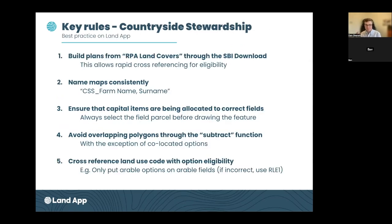The key rules when mapping a countryside stewardship application on the Land App: these are five rules I've pulled out after lots of experience, to make sure you're getting the most out of the platform. Rule number one is always use the RPA land covers to build your plan, accessible through an SBI number download — a Single Business Identifier. The reason is that the field parcels are structured by land cover type, which allows you to cross-reference eligibility easily. You might have a whole field parcel with a bit of woodland to the side — land covers will show that.